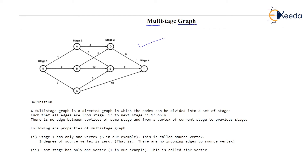The graph shown over here is a multi-stage graph. Basically, a multi-stage graph is a directed graph because every edge in this graph has a direction. It is also a weighted graph because every edge has a weight. So basically, a multi-stage graph is nothing but a weighted directed graph. But then why is this special term 'multi-stage graph' given?